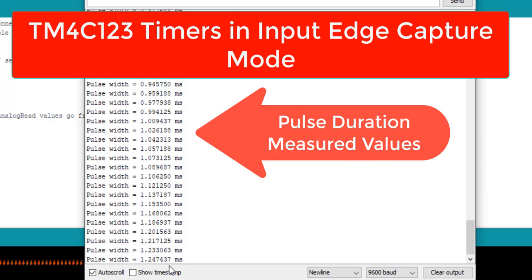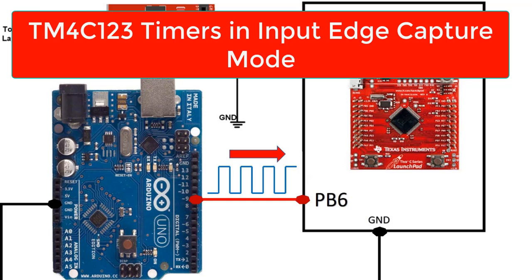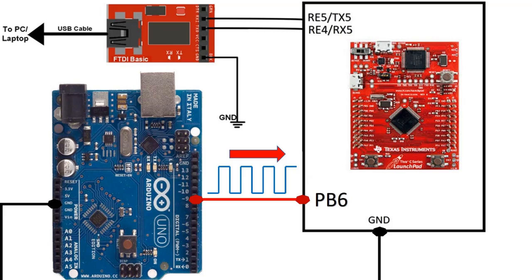In this tutorial, we will use the basic timer block in input edge time mode to capture rising and falling edges of pulses. For demonstration purposes, we will provide a pulse signal to one of the capture pins of TM4C123 Tiva launchpad from an external source such as Arduino.